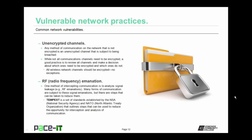A vulnerability that few network administrators think about is RF, or radio frequency, emanations. One method of intercepting communication is to analyze signal leakage — that's the RF emanation. Many forms of communication are subject to these signal emanations, but there are steps that can be taken to reduce them. TEMPEST is a set of standards established by the NSA and NATO that outline steps to reduce the opportunity for the interception and analysis of communication.